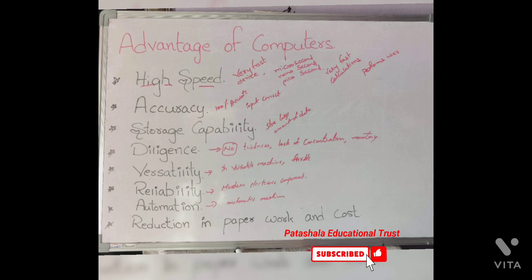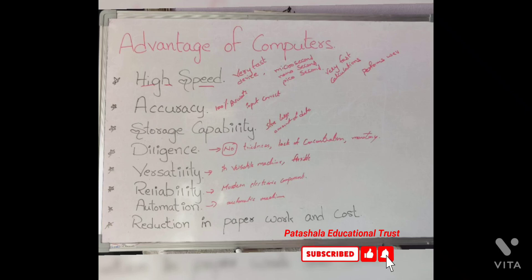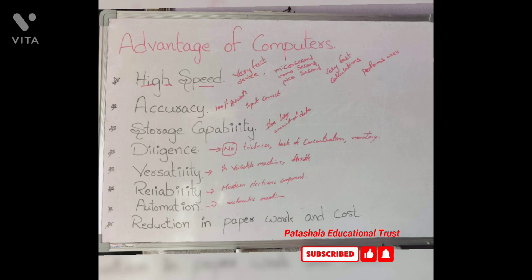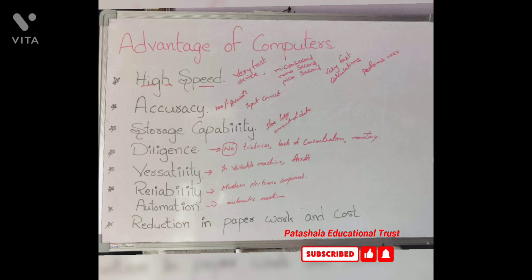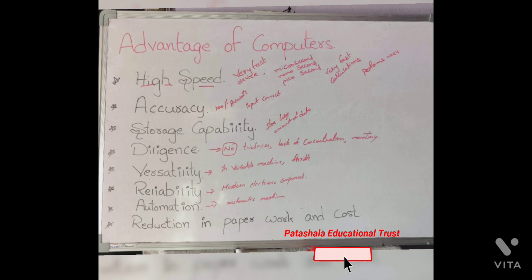High speed: a computer is a very fast device and it is capable of performing calculations on very large amounts of data. A computer has a unit of speed in microseconds, nanoseconds, and even picoseconds. It can perform millions of calculations in a few seconds, compared to a human who would spend many months to perform the same task.